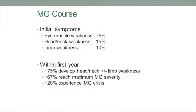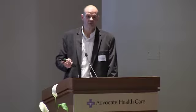Within the first year, about two-thirds reach their maximum MG severity. So usually within the first year, two-thirds of people will get as bad as it's going to be in terms of the myasthenia. But there's a third of people where that's not the case. And about 20% experience myasthenic crisis sometime during the first year.